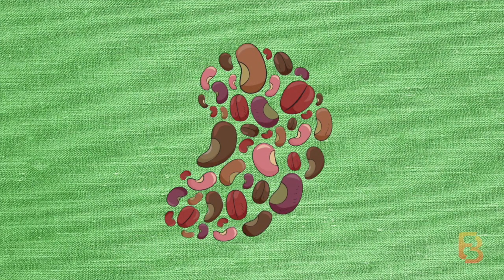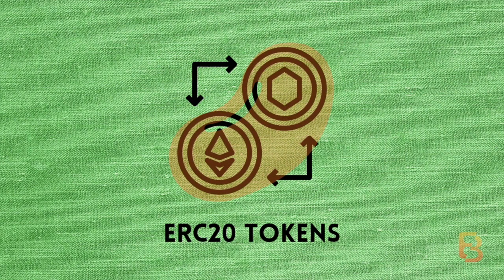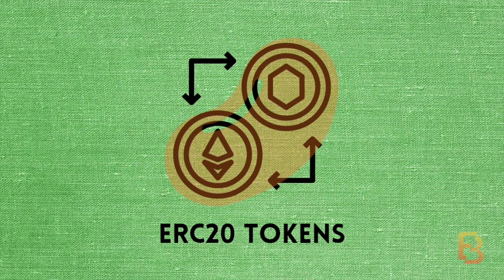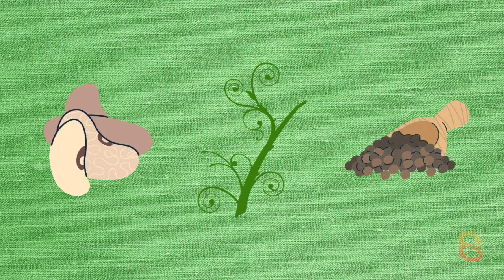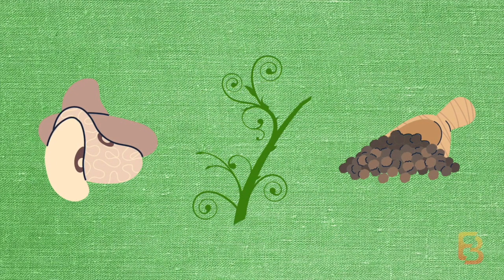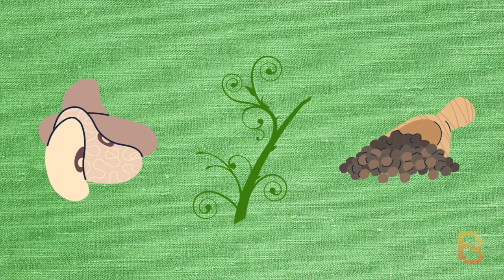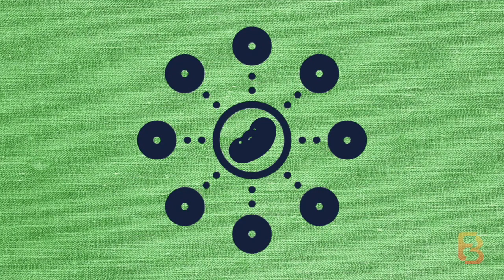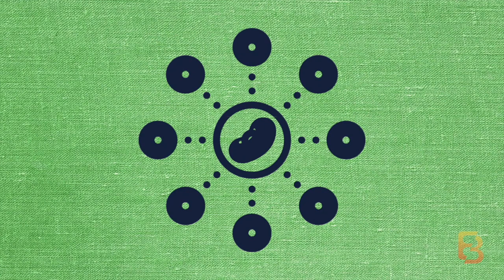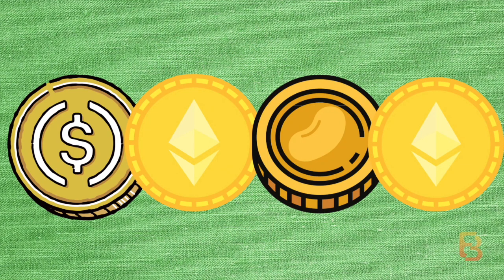Beanstalk issues three ERC-20 standard tokens: Beans, the algorithmic stablecoin; Stock, the yield-generating governance token; and Seeds, which is vested Stock. Beanstalk relies on three interconnected parts. The first is a decentralized price oracle — Beanstalk uses two Uniswap liquidity pools, USDC/ETH and Bean/ETH, to create this price oracle.